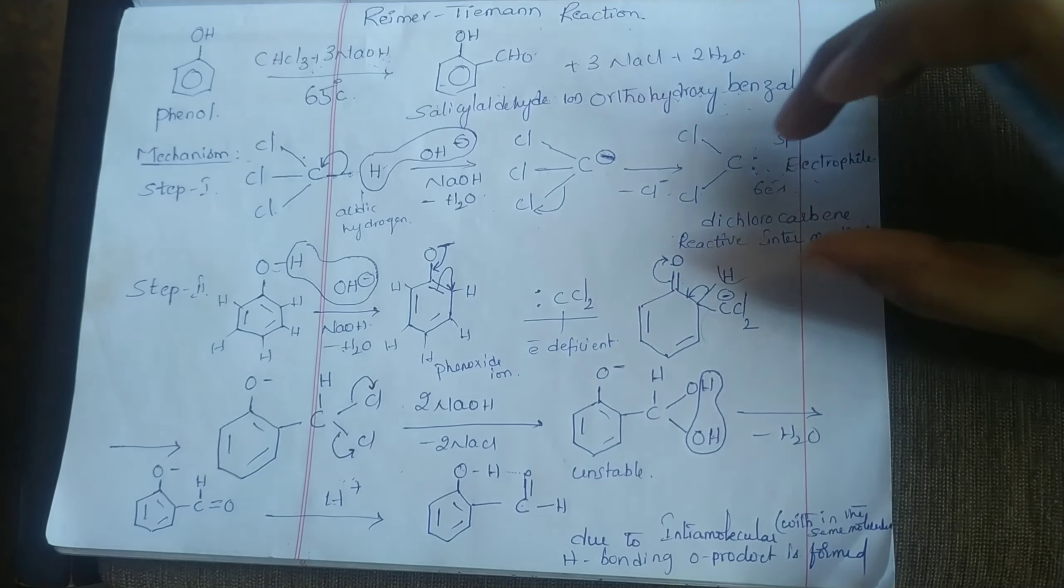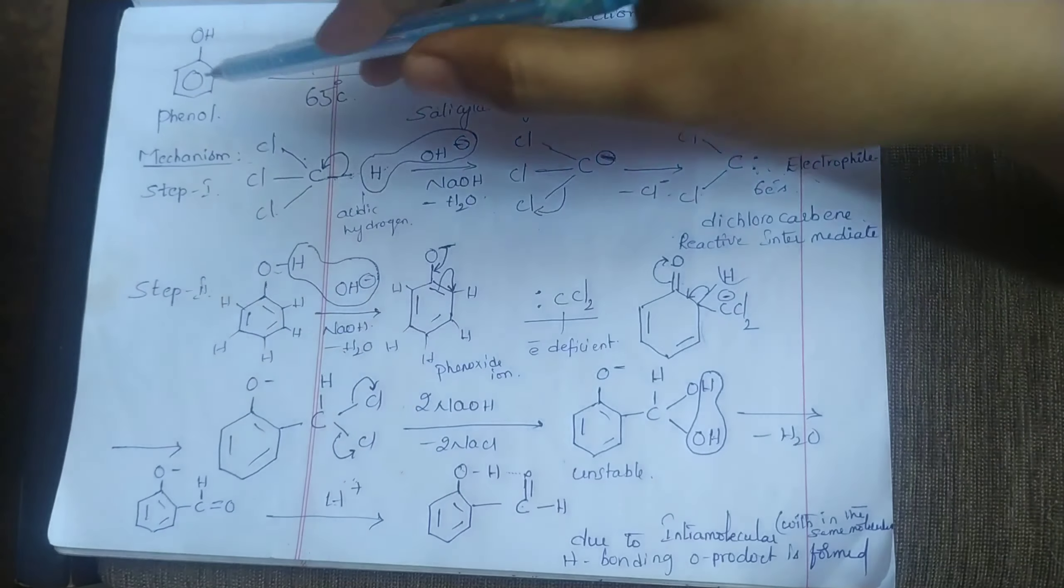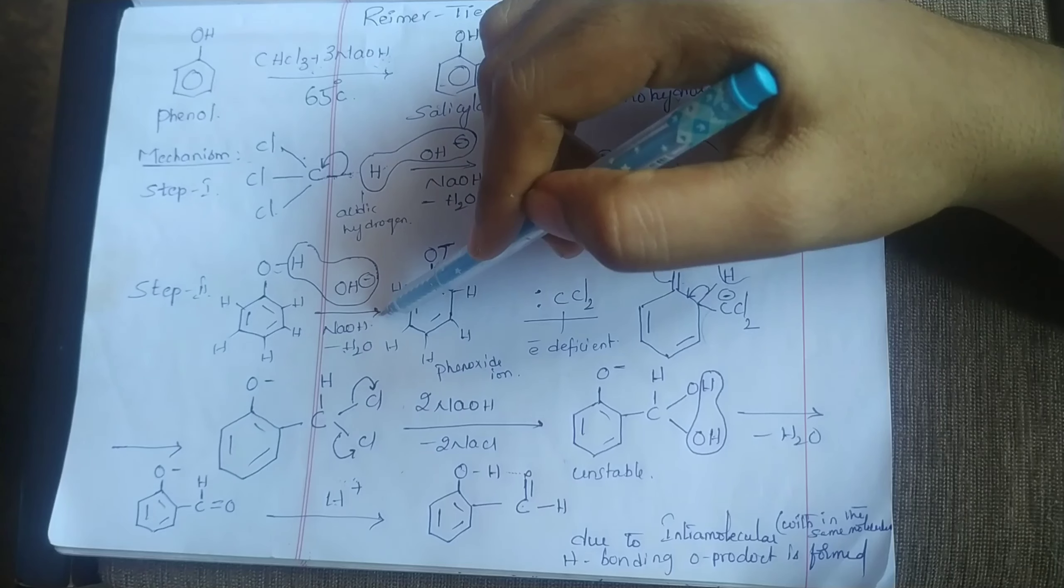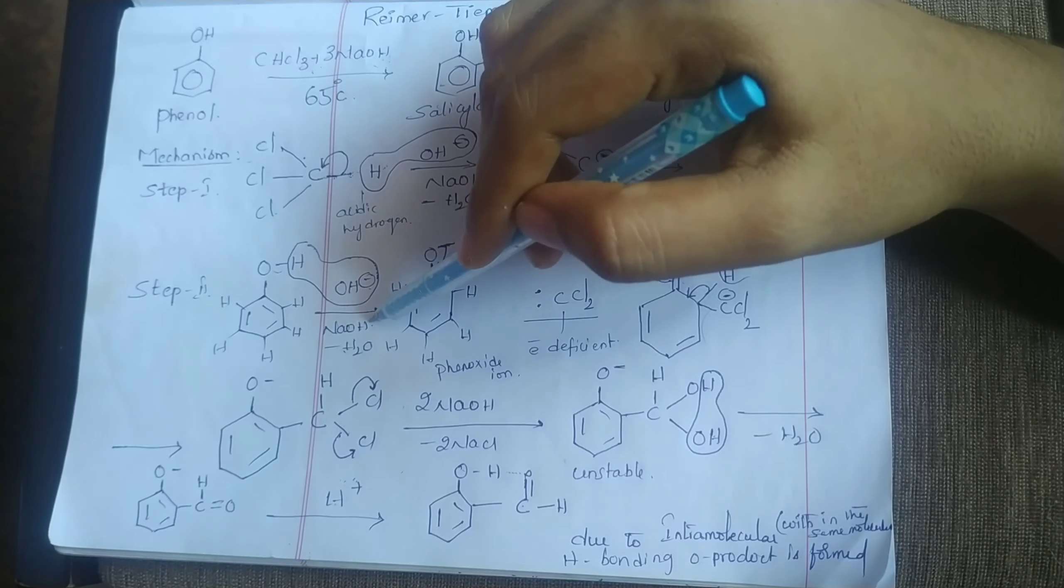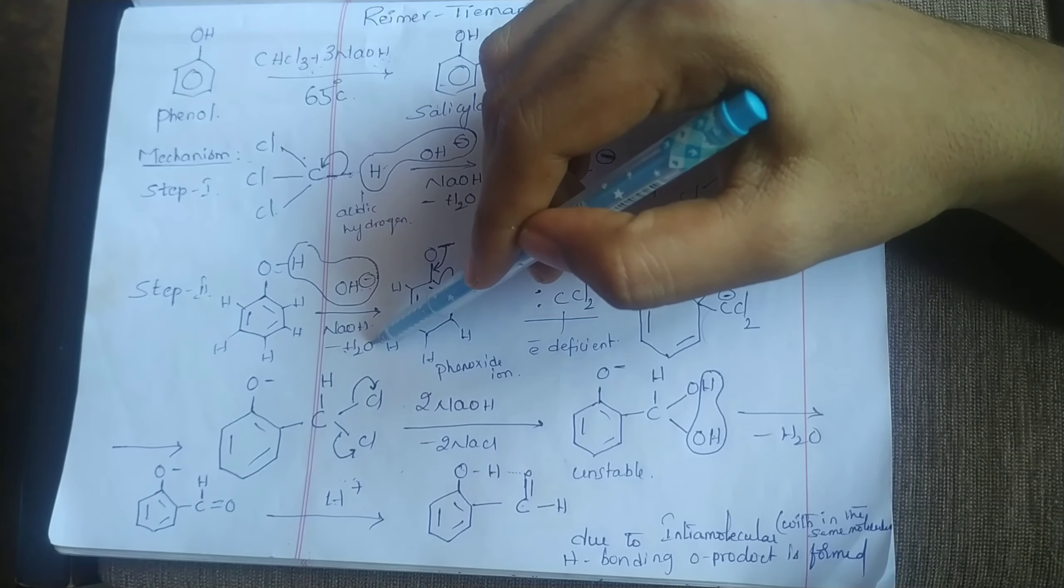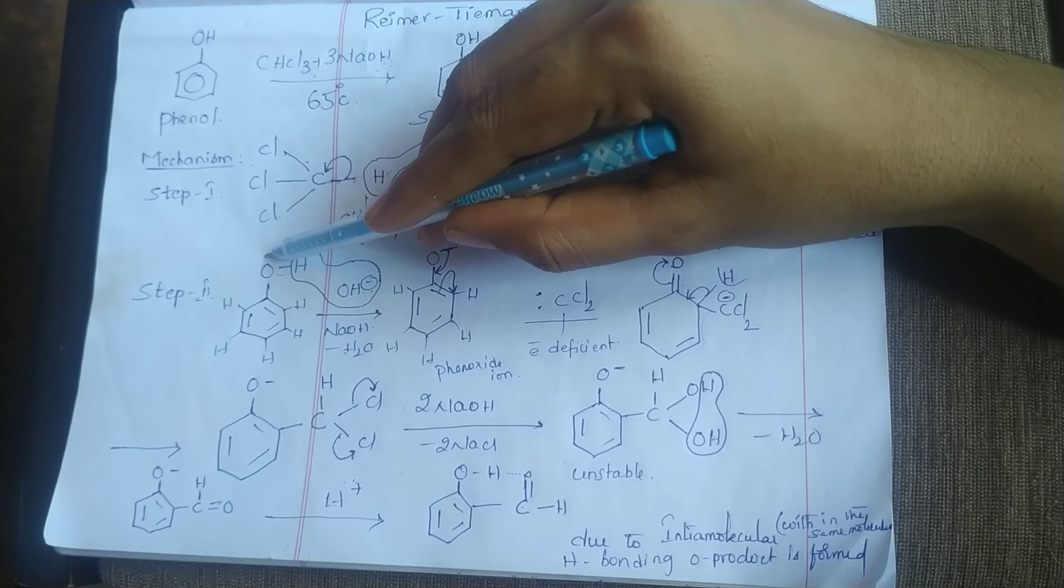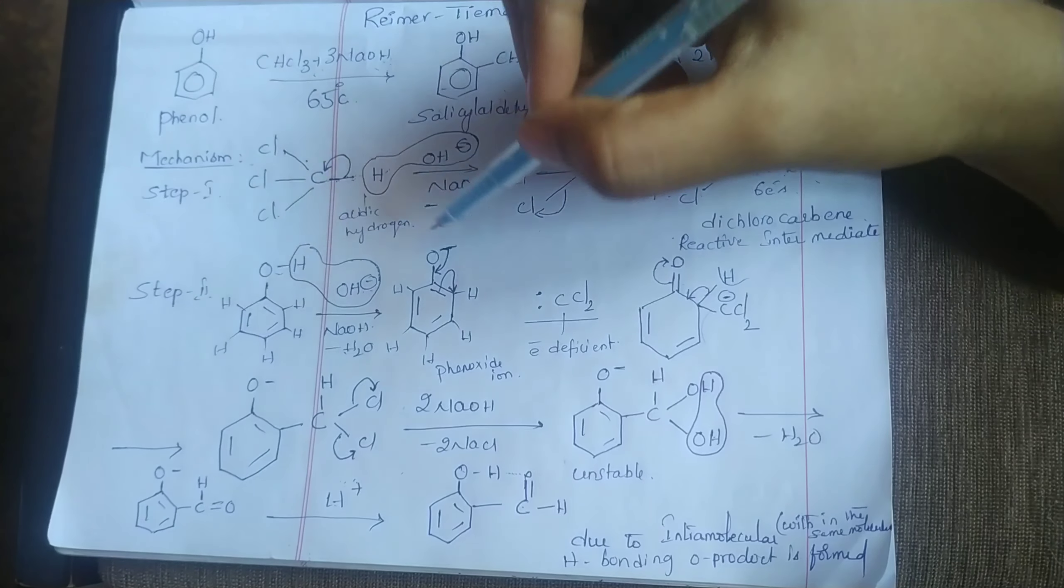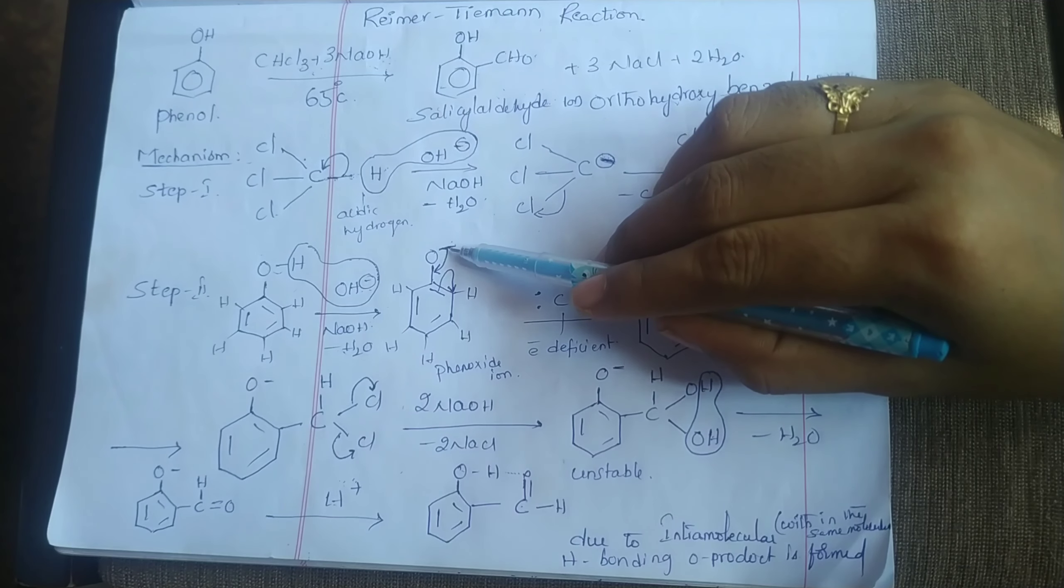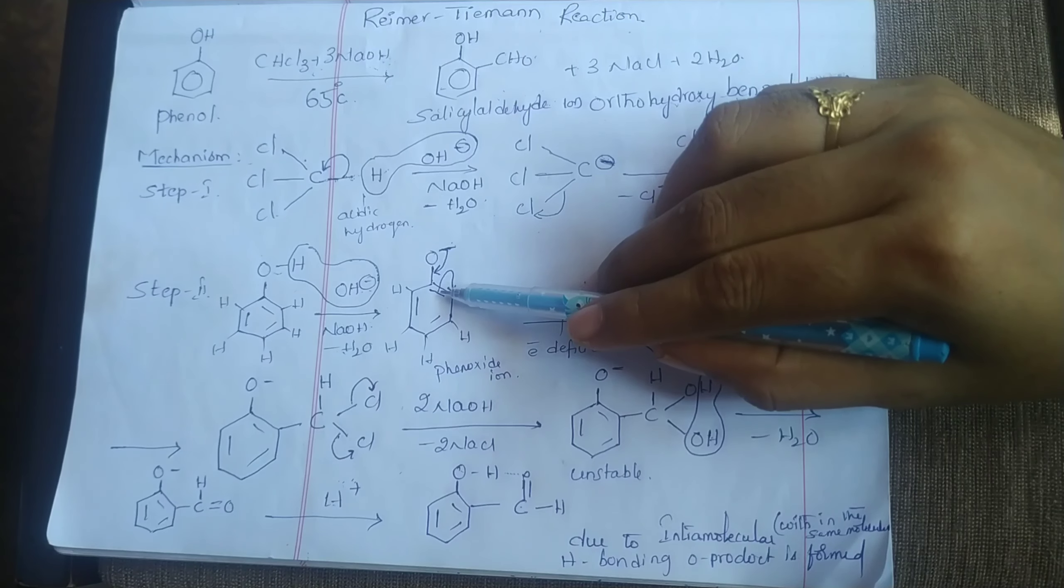In the second step, take phenol and phenol is treated with NaOH. OH minus ion in NaOH attacks on hydrogen and goes as water molecule, and this bond shifts towards oxygen atom, so oxygen gets negative charge.